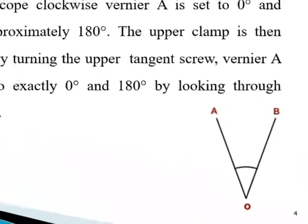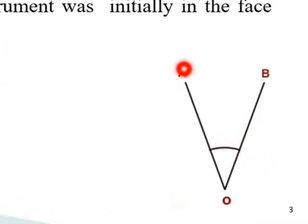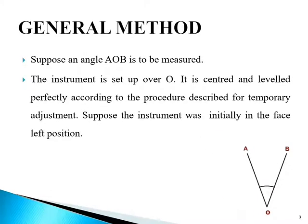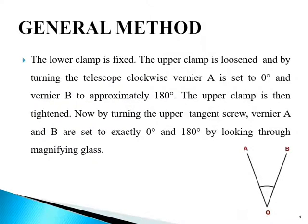Here you can see in the image — angle AOB is to be measured. The instrument is set up over station O, centered and leveled perfectly according to the procedure for temporary adjustment which we have already covered. Suppose the instrument is initially in the face-left position. The lower clamp is fixed, the upper clamp is loosened, and by turning the telescope clockwise, Vernier A is set to 0° and Vernier B to approximately 180°. The upper clamp is then tightened, and by turning the upper tangent screw, Vernier A and B are set to exactly 0° and 180° by looking through the magnifying glass.